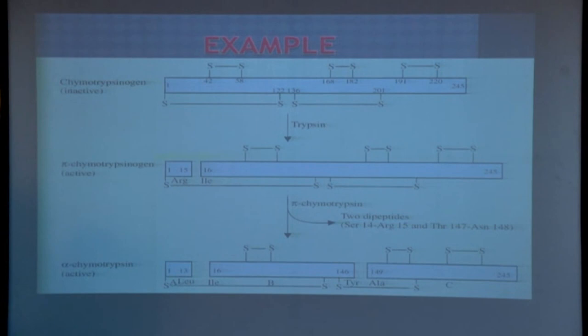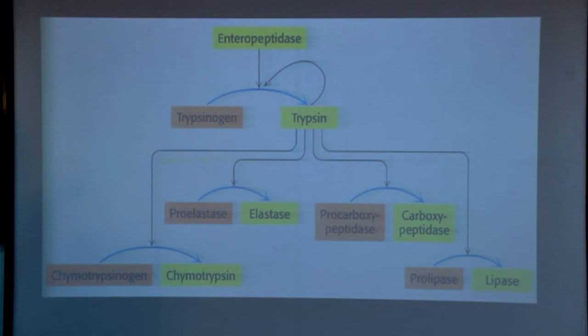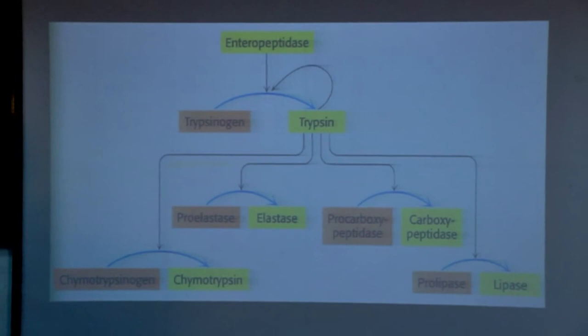Other examples include enteropeptidase, which converts the inactive trypsinogen to active trypsin. This active trypsin then activates proelastase to elastase, pro-carboxypeptidase to carboxypeptidase, chymotrypsinogen to chymotrypsin, and prolipase to active lipase. Further examples: trypsinogen to trypsin, chymotrypsinogen to chymotrypsin, and pepsinogen to pepsin — these are all digestive enzymes.